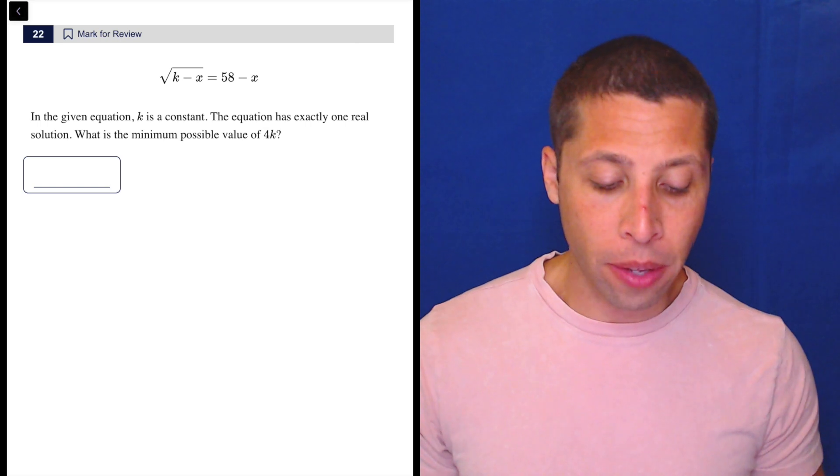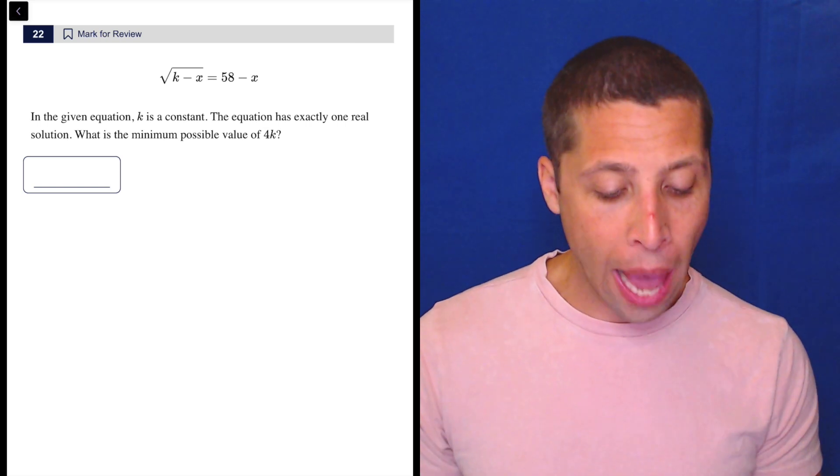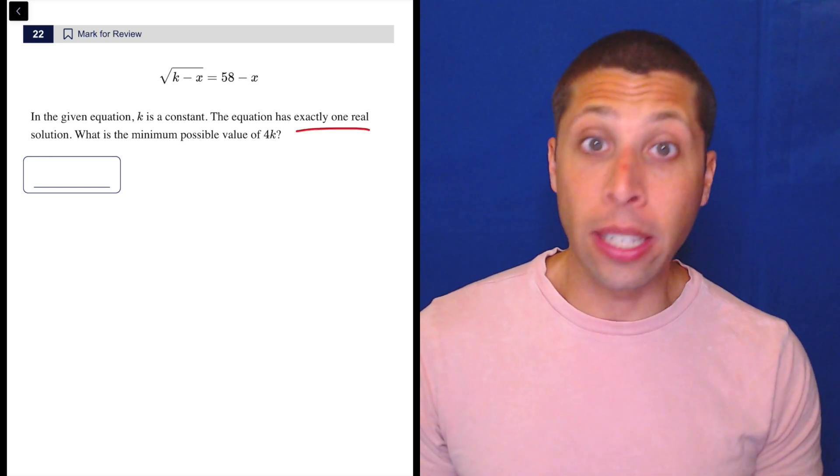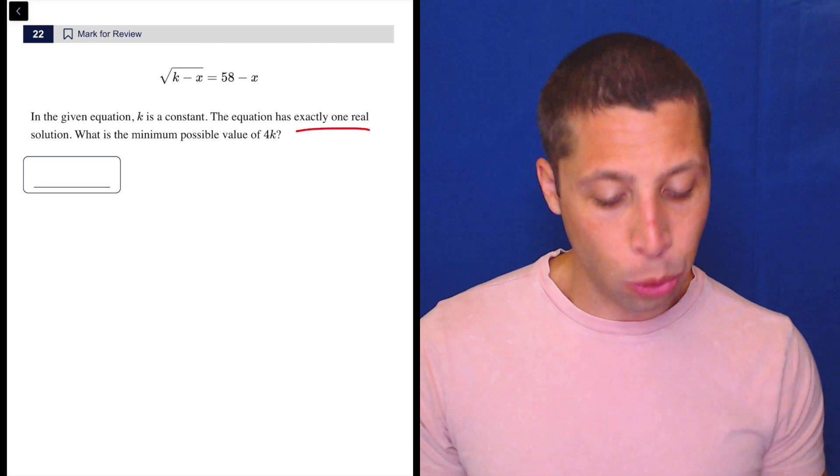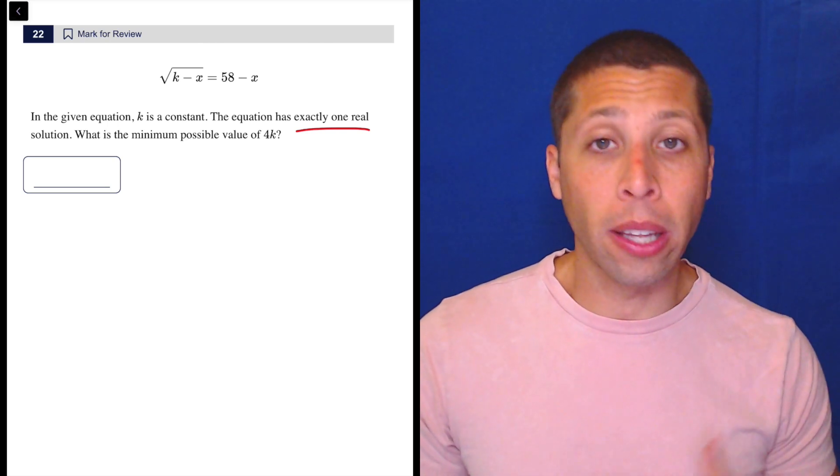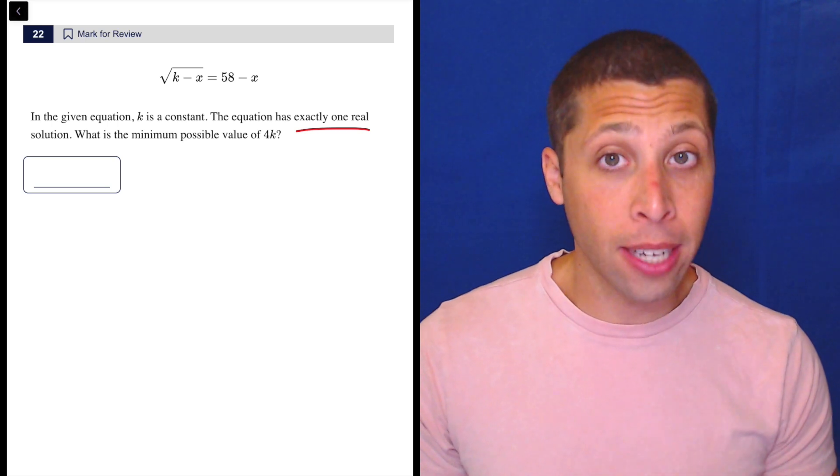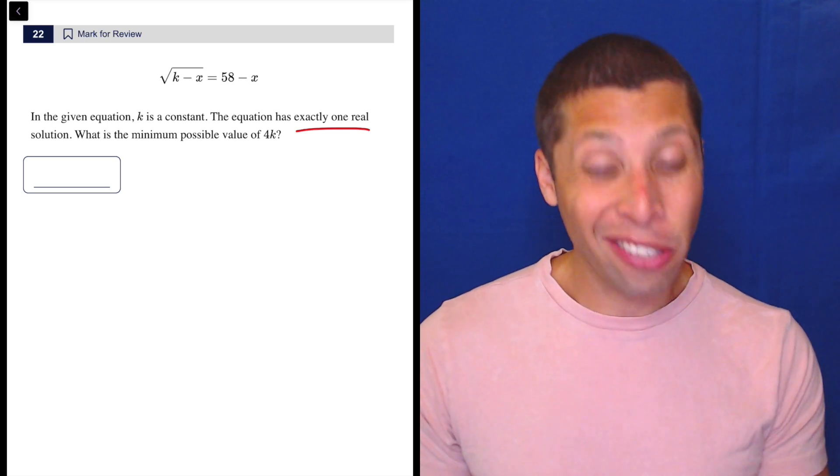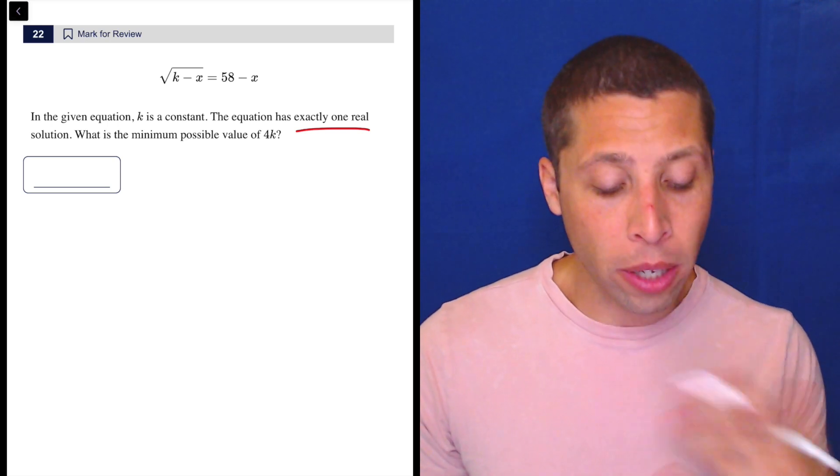And it's not so bad. This is something that if you recognize the vocabulary here, is very easy to think about. We're talking about the number of solutions. Now, we've seen a question like this already in this module that had to do with the lines. And when we had lines, we were able to think about slopes and y-intercepts. These are clearly not lines, so we're going to need a different method.